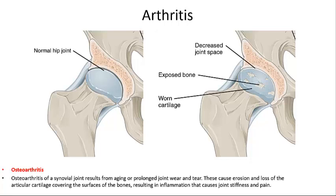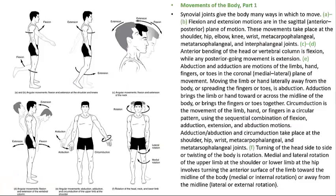Gout, or gouty arthritis, is caused by too much uric acid in the blood. Having too much uric acid is not always harmful — many people with high levels never get gout. But when levels are too high, uric acid may form crystals in the joints, causing sudden burning pain, stiffness, and swelling, often in the big toe. These attacks can happen over and over unless treated, and gout is more common in men.